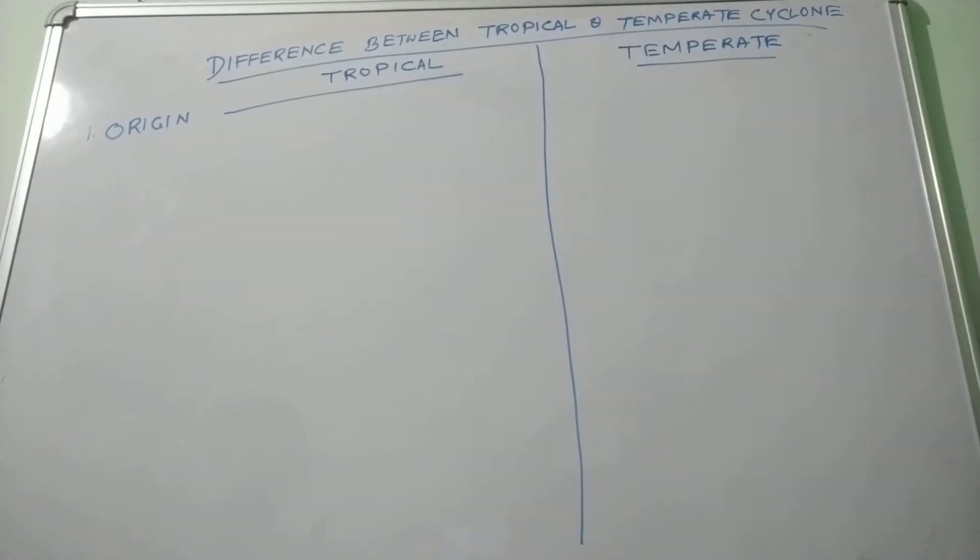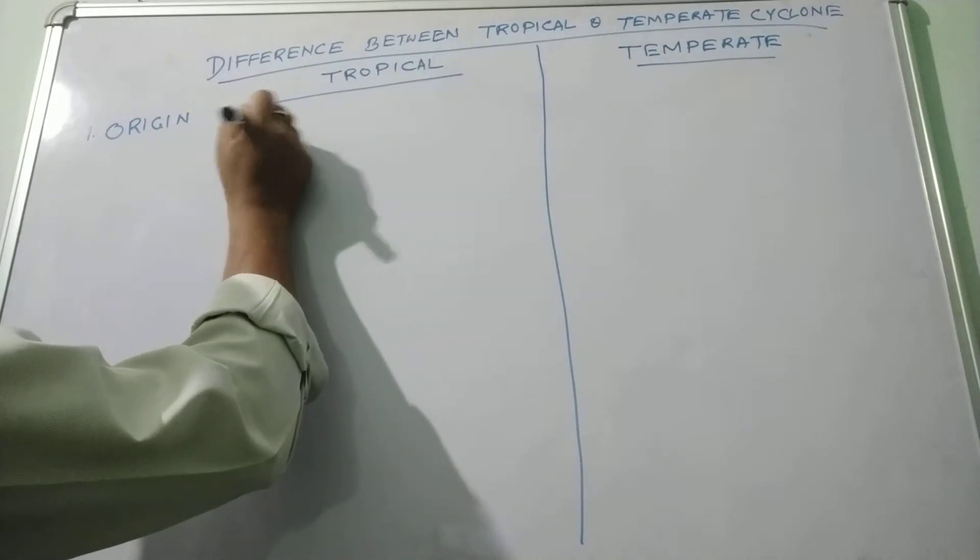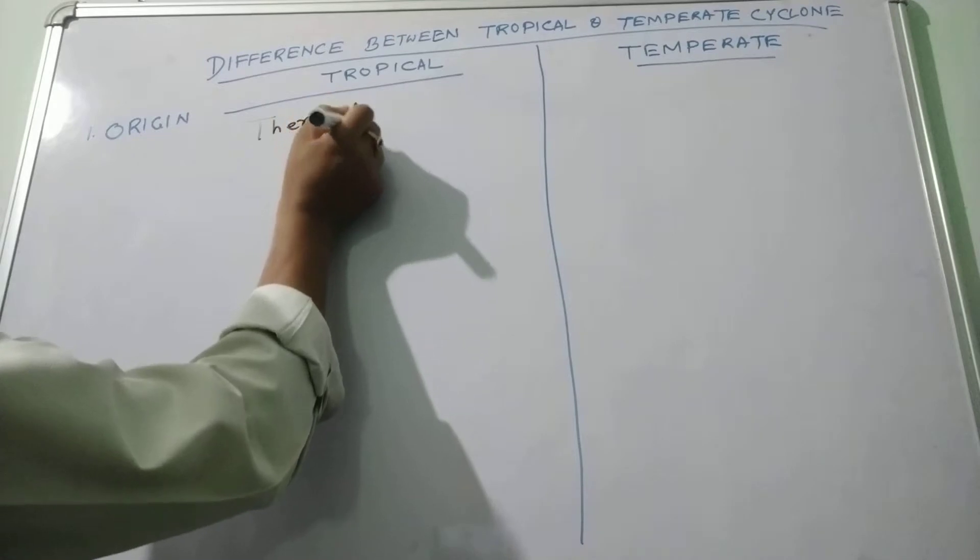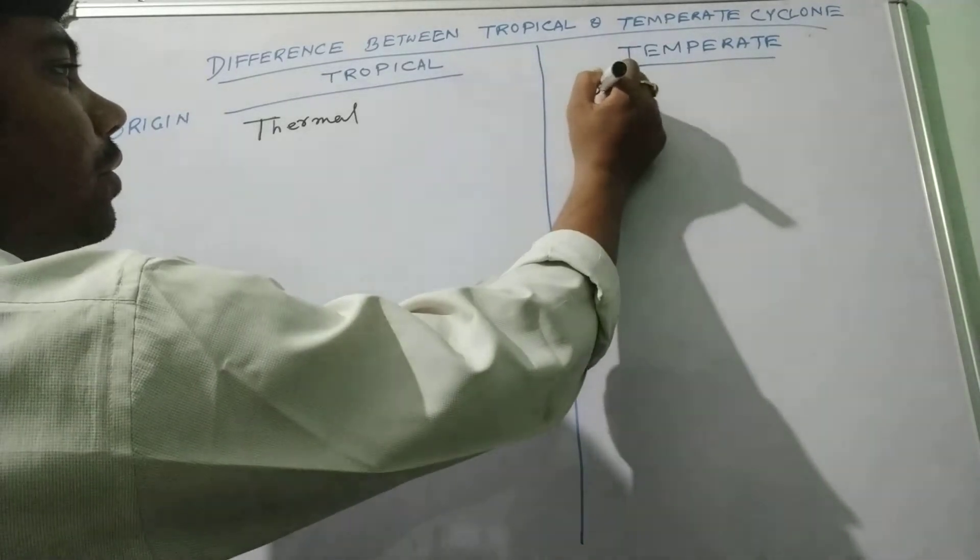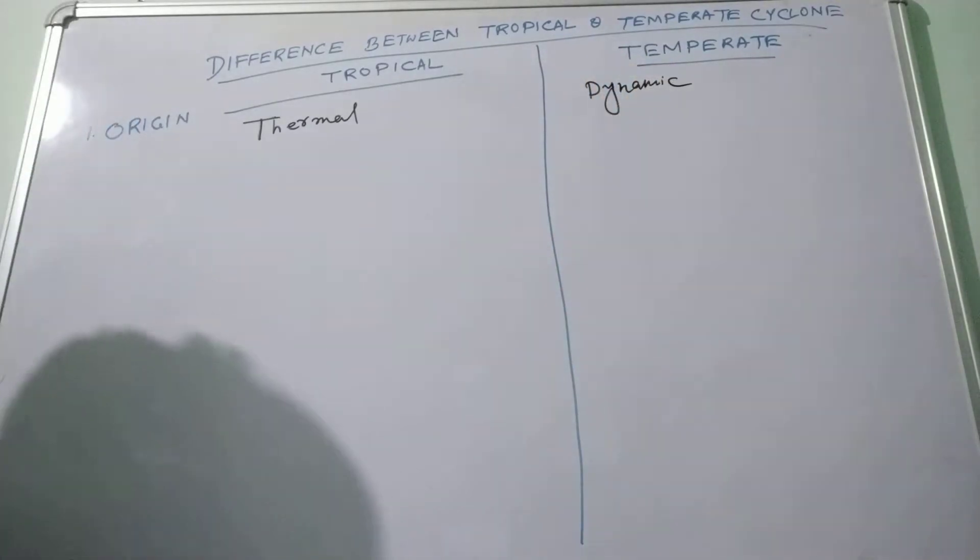In case of the tropical cyclone, the origin is basically thermal origin. And temperate cyclone, that is dynamic. Why is it dynamic? It is caused due to the Coriolis force movement of the air mass.